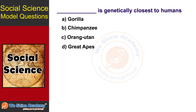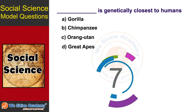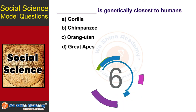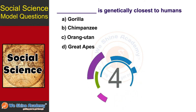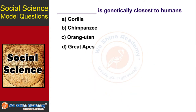The first question is: which is genetically closest to humans? You have 10 seconds to find out. The answer is Option B, Chimpanzee. That is why the chimpanzee is genetically closest to humans.